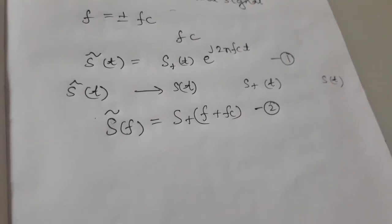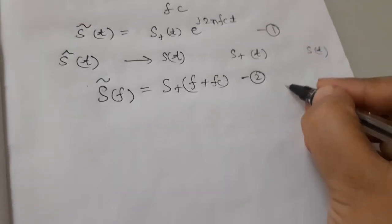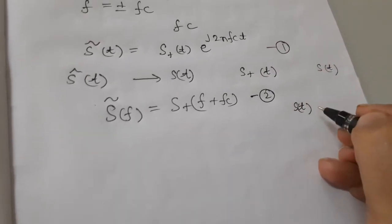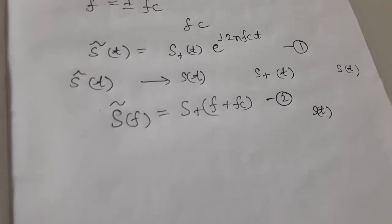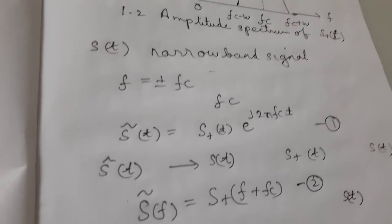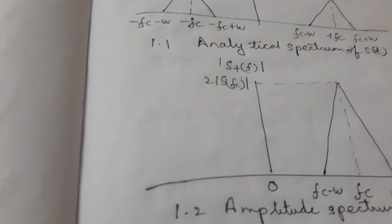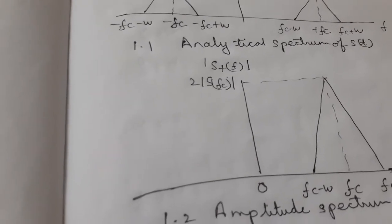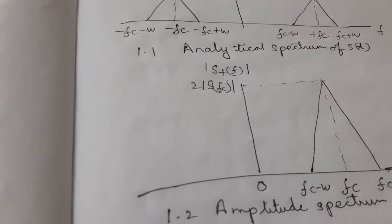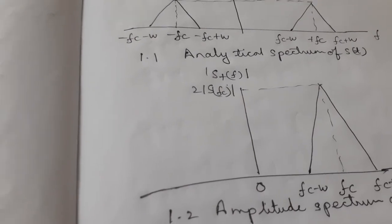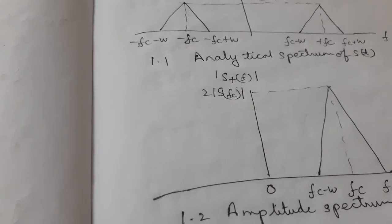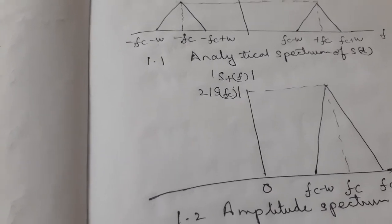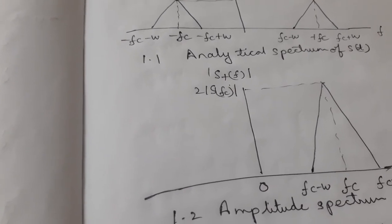Complex envelope of the band pass signal S of t. Let us assume that the spectrum of S of t is shown in figure 1. Since the center frequency fc is very much greater than the bandwidth 2w of the signal S of t, the signal S of t is referred to as a narrow band signal.